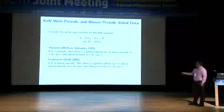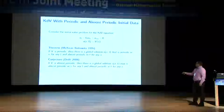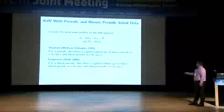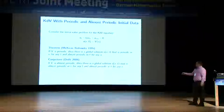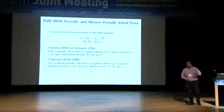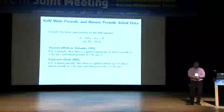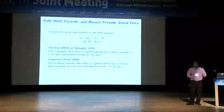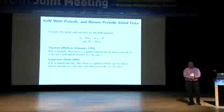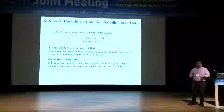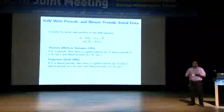If you start off with an almost periodic initial function V, you would like to prove that there is a global solution that stays almost periodic in X, and the time dependence will be almost periodic as well. That's what the Deift conjecture says, and almost nothing about this conjecture is easy.